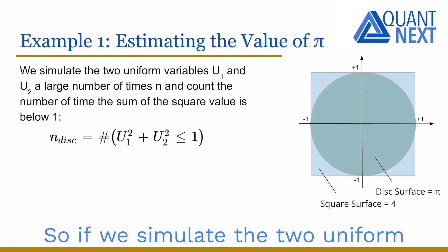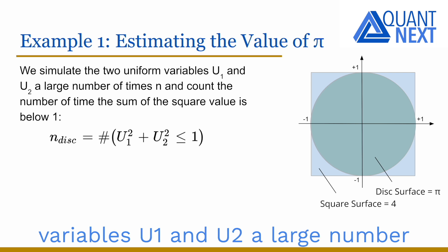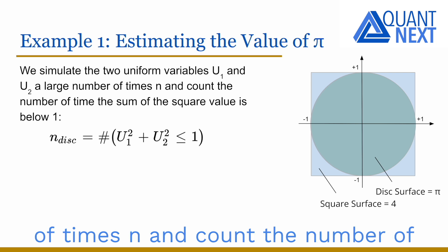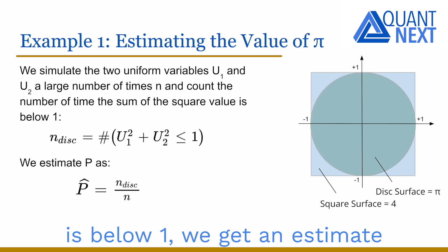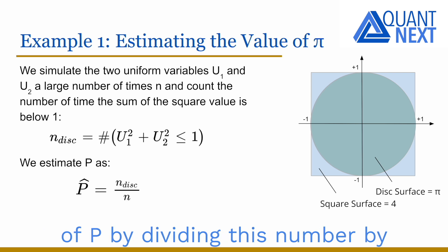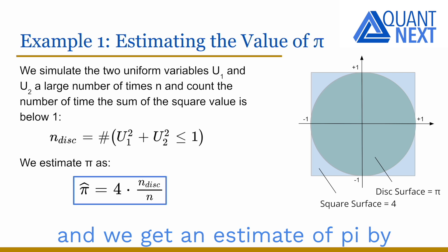So if we simulate the two uniform variables u1 and u2, a large number of times n and count the number of times the sum of the square value is below one, we get an estimate of p by dividing this number by the number of simulations n and we get an estimate of pi by multiplying it by four.